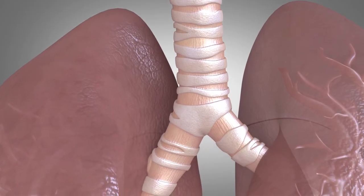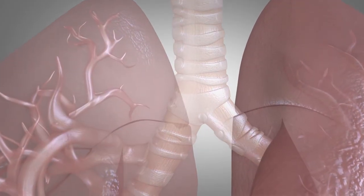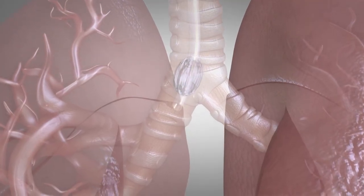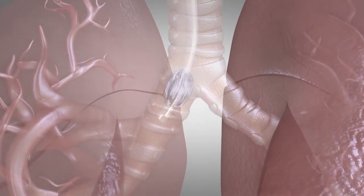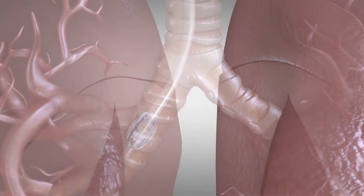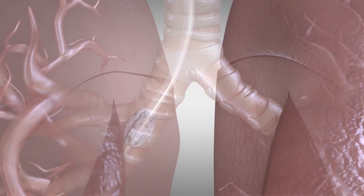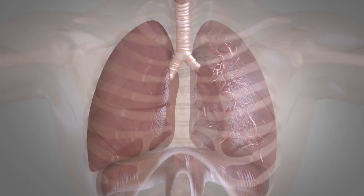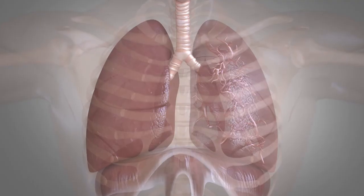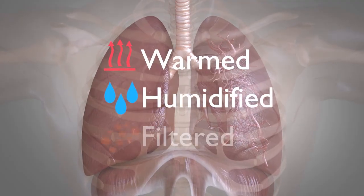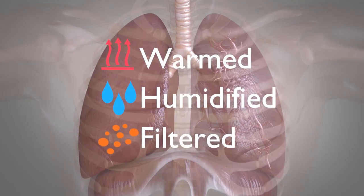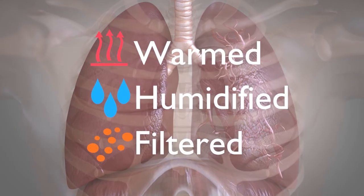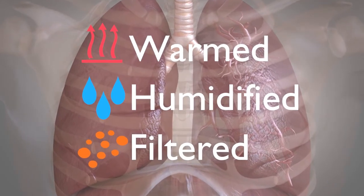Inhaled foreign bodies therefore have a tendency to lodge in the right main bronchus, and in endotracheal intubation, where a tube is inserted into the airway to facilitate mechanical ventilation, it can be easy to inadvertently insert the tube down the right main bronchus, blocking off the whole left lung. The lower airways need the air they receive to be warmed, humidified and filtered.